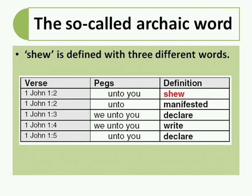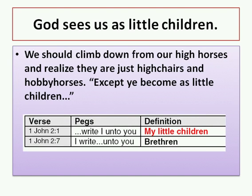The so-called archaic word 'shew' or 'show,' spelt the old way, is defined in three different words. Verse 2: 'unto you, shew.' Verse 2: 'unto, manifested.' Verse 3: 'we, unto you, declare.' Verse 4: 'we, unto you, write.' Verse 5: 'we, unto you, declare.' So there you've got that word clearly shown as manifested, declare, write, unto you. God sees us as little children — except you become as little children. In chapter 2 verse 1: 'I write unto you, my little children.' In verse 7: 'I write unto you, brethren.' So we're brethren and we're little children.